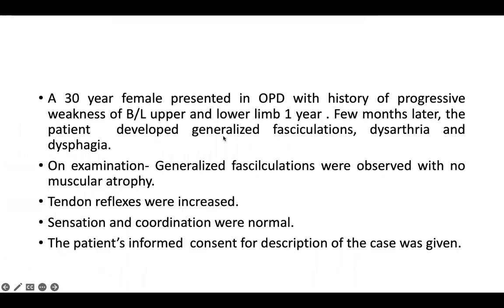A 30-year female presented in OPD with history of progressive weakness of bilateral upper and lower limbs for one year. Few months later, the patient developed generalized fasciculations, dysarthria, and dysphagia.